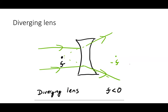For a diverging lens, parallel rays bend through the positive focal point, which is in front of the lens since the focal length is negative. The negative focal point is then on the far side of the lens. It's important to label which focal point is positive and which is negative to draw the ray diagrams correctly, especially when switching between converging and diverging lenses.